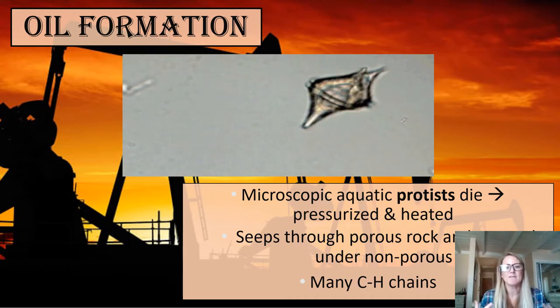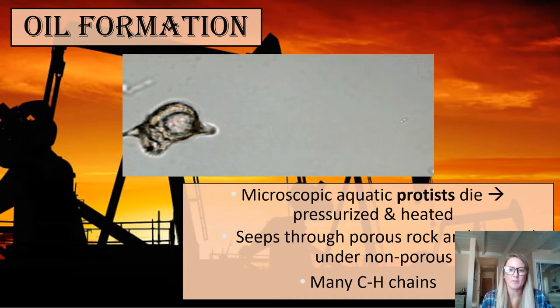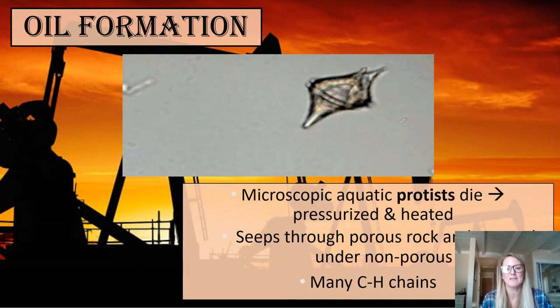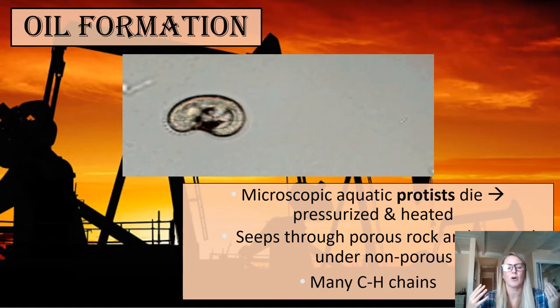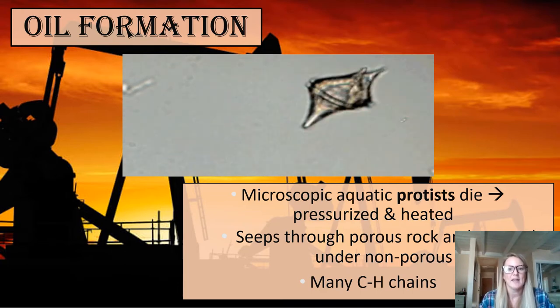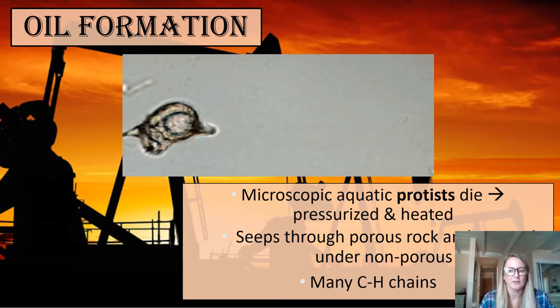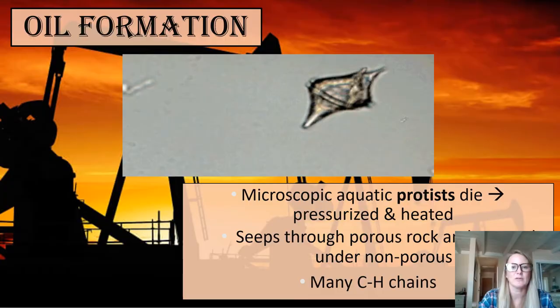Oil is composed of many hydrogens and carbons. They make these very long structures called hydrocarbon chains, and when you put a whole bunch of those together, you get what's known as oil.